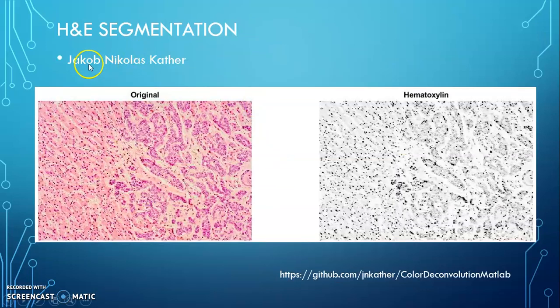Then, thanks to Jacob Nikolas Cather, he published some other convolutional methods on GitHub. And I used his function and I got this one. Because H channel image gives us more details on the nucleus, we could easily see that the nucleus are here. So we can do some wonderful things on this.